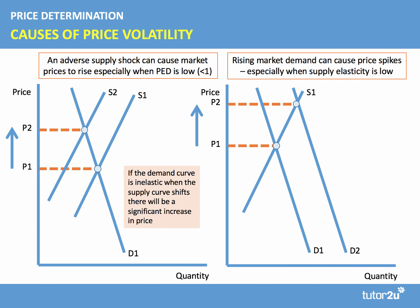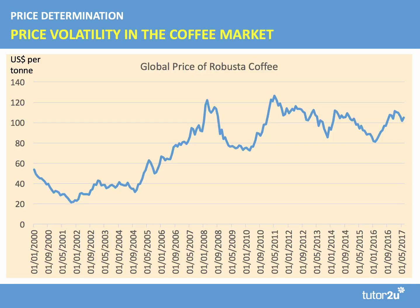Here's another example: when the demand curve shifts out to the right — an increase in market demand — this can also cause a price spike from P1 to P2, especially if the elasticity of supply is low. D1 shifts out to D2, but with an inelastic supply curve it's hard for the market to supply extra products, causing strong upward pressure on the price level.